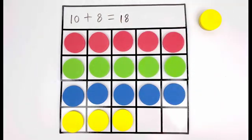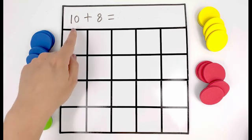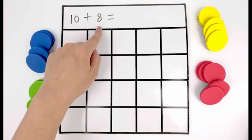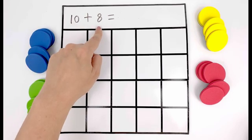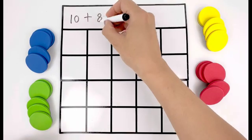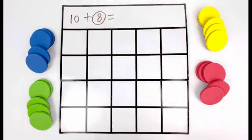There's also a trick we can use to make adding things together simpler. Here we have ten plus eight. So let's keep number ten and only add circles for number eight. Let's count eight circles.